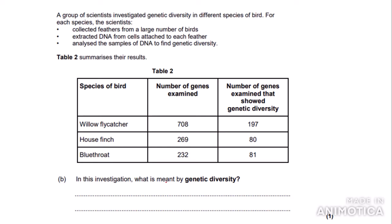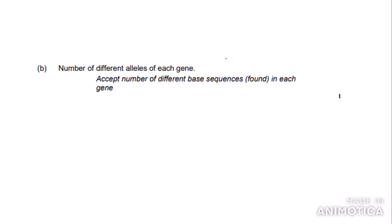Here's the next part of the question. A group of scientists investigated genetic diversity in different species of bird. For each species, they collected feathers from a large number of birds, extracted DNA from cells attached to each feather, and analysed the DNA samples to find genetic diversity. Table 2 summarises their results, showing three species — the willow flycatcher, the house finch, and the blue-throat — with the number of genes examined and the number of genes that showed genetic diversity. Part B asks: in this investigation, what is meant by genetic diversity? This is a simple one-mark question requiring fact recall. As stated earlier, genetic diversity is the number of different alleles of each gene — and the mark scheme also accepts 'the number of different base sequences found in each gene.'